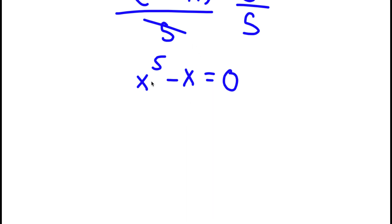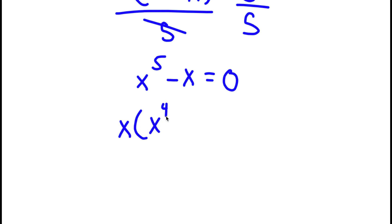Now, from x to the power of 5 minus x, I can simply factor out x. So if I factor out x, I get x times x to the power of 4 — because x to the power of 5 divided by x is x to the power of 4 — and negative x divided by x is negative 1. So this is equal to 0.